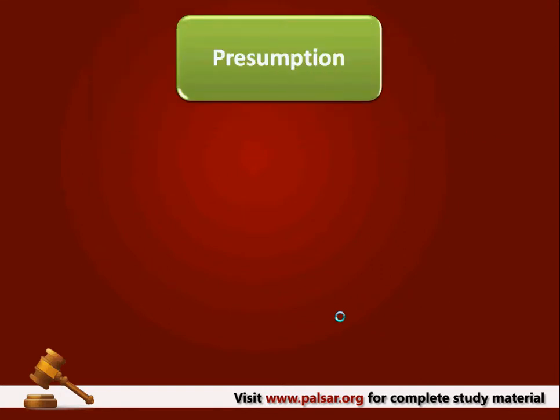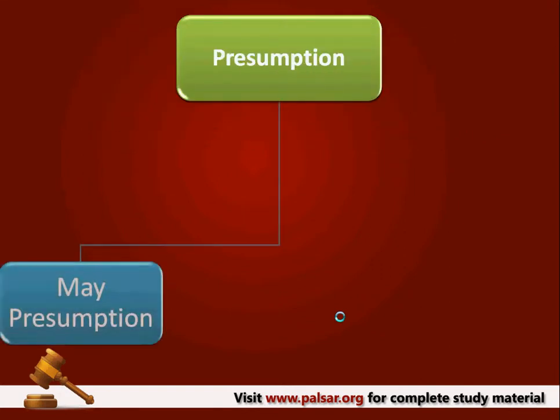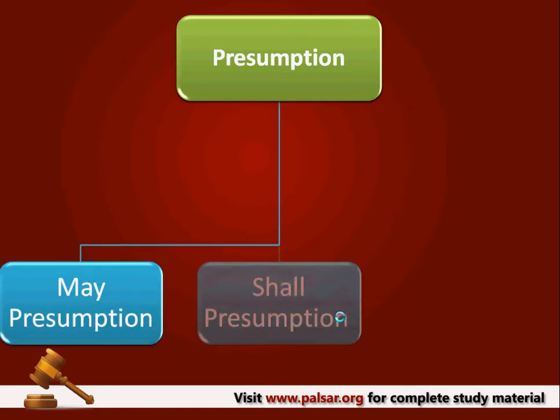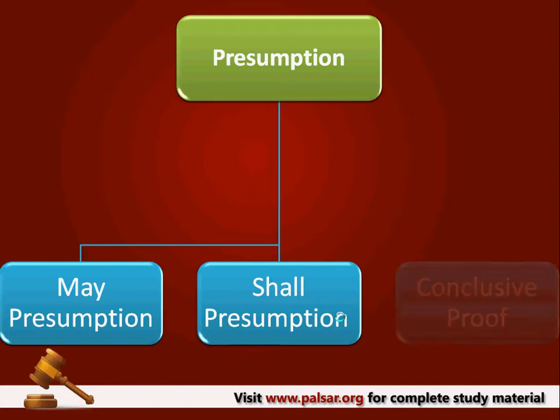Now let us see various kinds of presumptions provided under the Indian Evidence Act. They are: May Presumption, Shall Presumption, and Conclusive Proof.